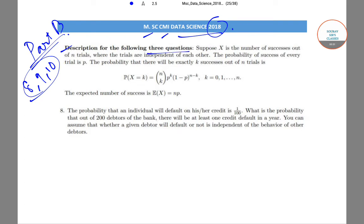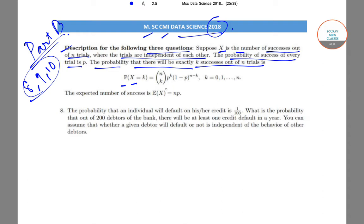The description states: suppose X is the number of successes out of N trials, where the trials are independent of each other. The probability of success of every trial is P. Then the probability of exactly K successes is P(X=K) = N_C_K × P^K × (1-P)^(N-K), where K goes from 0 to N. The expected number of successes is E(X) = NP.